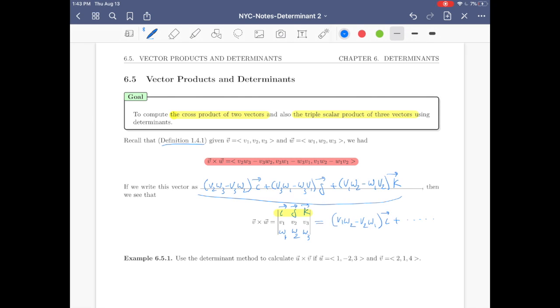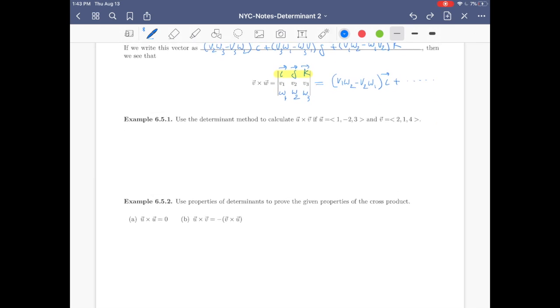Plus, and then keep going. Just evaluate the rest. You see that exactly what we get is this vector right here. Okay good. So we learned a new way to calculate cross product of two vectors.